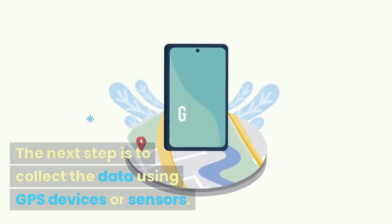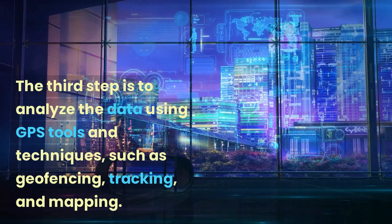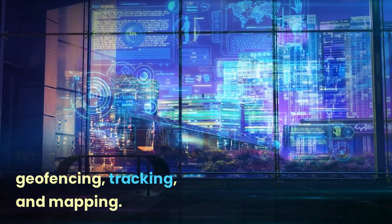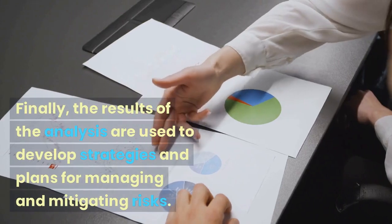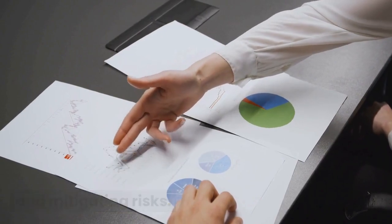The next step is to collect the data using GPS devices or sensors. The third step is to analyze the data using GPS tools and techniques, such as geofencing, tracking, and mapping. Finally, the results of the analysis are used to develop strategies and plans for managing and mitigating risks.